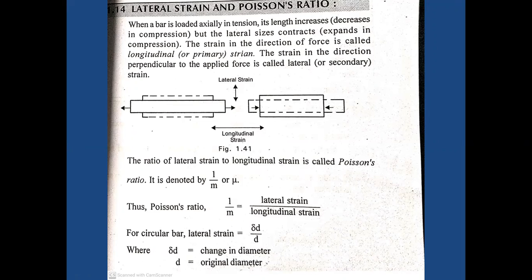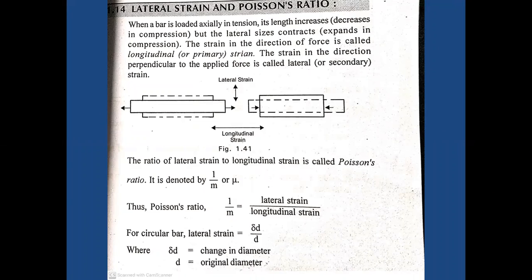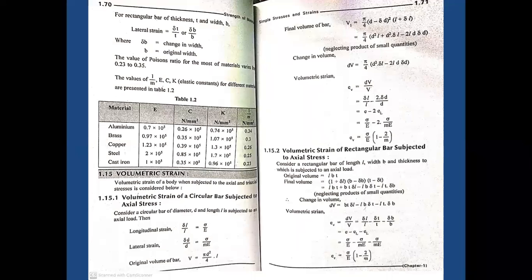Every material has some amount of Poisson's ratio. For a circular bar, lateral strain equals delta d by d. For a rectangular bar of thickness t, lateral strain equals delta t by t or delta b by b. The value of Poisson's ratio for most materials varies from 0.23 to 0.35, which is the most acceptable range.